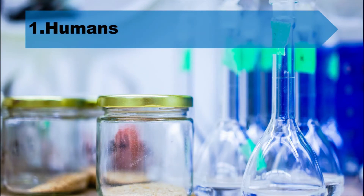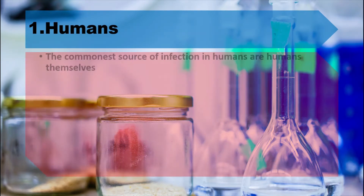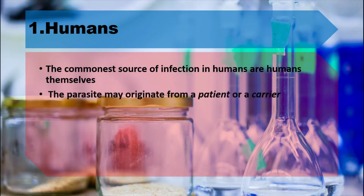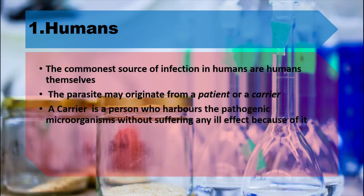Sources means the organisms that are infecting human beings originate from there. First, we will see humans as a source of infection. Humans are the most common source of infection, and the parasite may originate from a patient or a carrier. The patient is the person who is suffering from the disease, while a carrier is a person who harbors the pathogenic microorganism without suffering any ill effect from it.